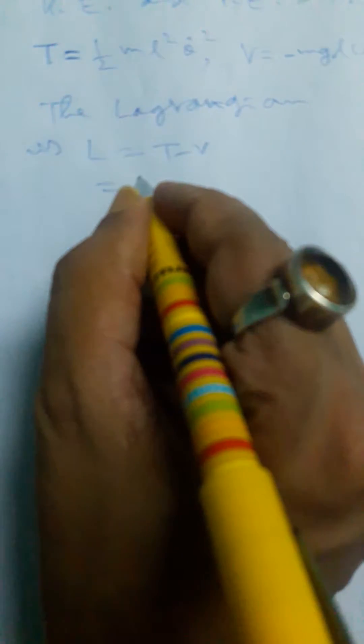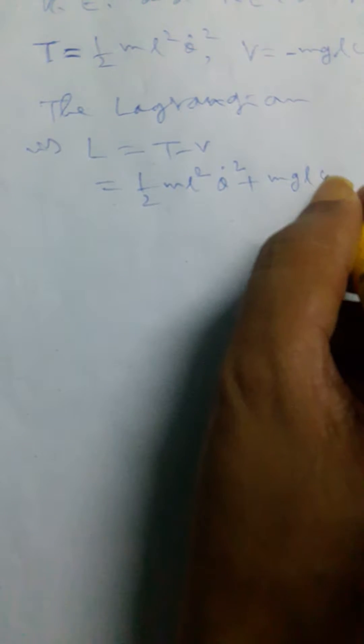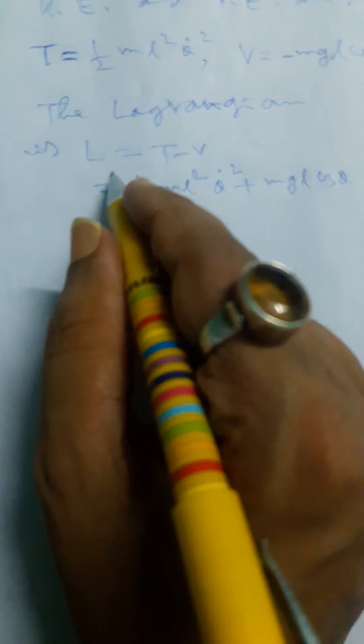L = T - V = ½ml²θ̇² + MgL cos θ. So finally, we find the Lagrangian function.